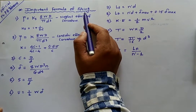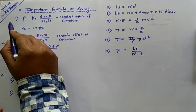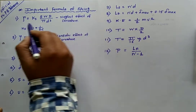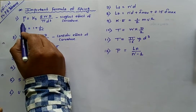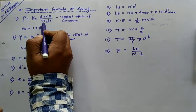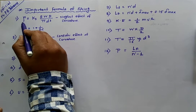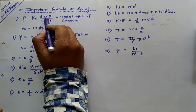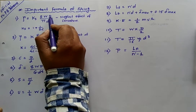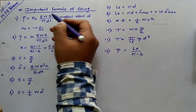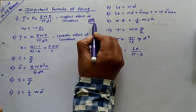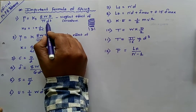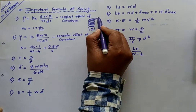Let us discuss the first formula. Whenever the curvature effect related to a spring is to be neglected, then shear stress (tau) is calculated using the formula: tau = Ks × 8WD / (π d³), where tau is shear stress, Ks is Wahl's shear stress factor, W is the load applied on the spring, capital D is the mean diameter of the spring, and small d is the wire diameter of the spring.